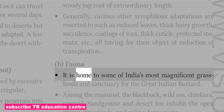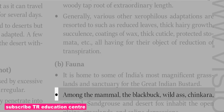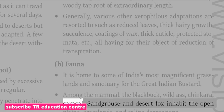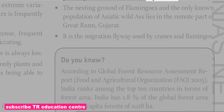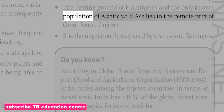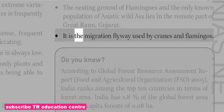The Thar Desert is home to some of India's most magnificent grasslands and is a sanctuary for the Great Indian Bustard. Among the mammals, the blackbuck, wild ass, chinkara, caracal, sand grouse and desert fox inhabit the open plains, grasslands and saline depressions. The nesting ground of flamingos and the only known population of Asiatic wild ass lies in the remote part of Great Rann, Gujarat. It is also a migration flyway used by cranes and flamingos.